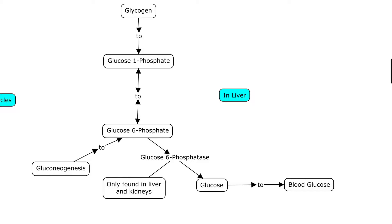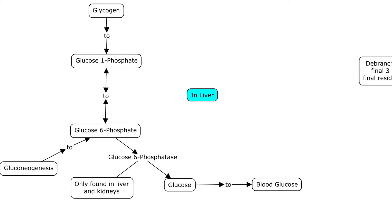So let's go ahead and look at the liver. You can break down your glycogen into glucose 1-phosphate, rearrange it to glucose 6-phosphate — which is what you also get from gluconeogenesis — and then your glucose 6-phosphatase will turn it into glucose, which you can then ship out into the blood.